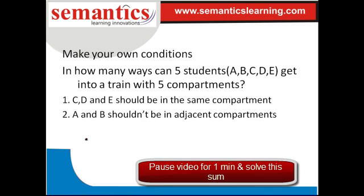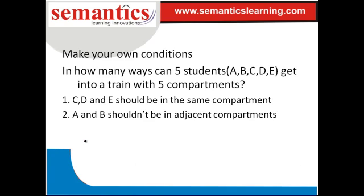Try this sum: five students A, B, C, D, E get into a train with five compartments. C, D, and E should be in the same compartment; A and B should be in adjacent compartments. C can go five ways; D and E must be in the same compartment as C, so each has one way. A can go five ways, but B must be adjacent to A — giving multiple possibilities depending on A's position.